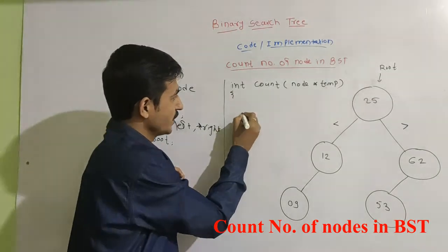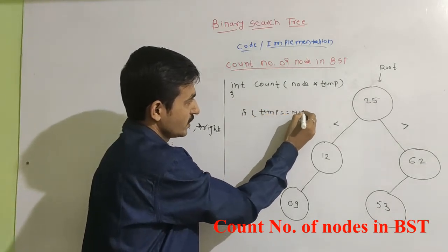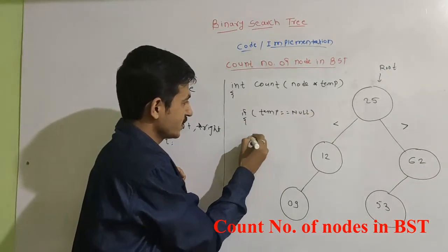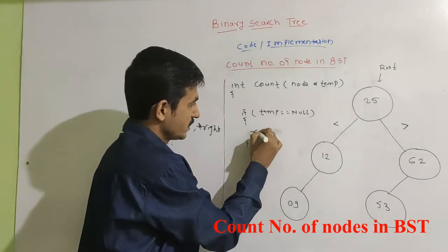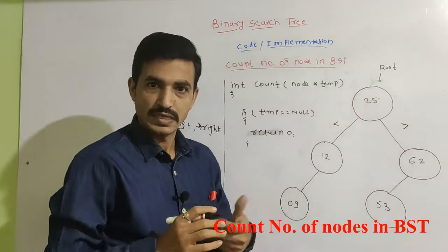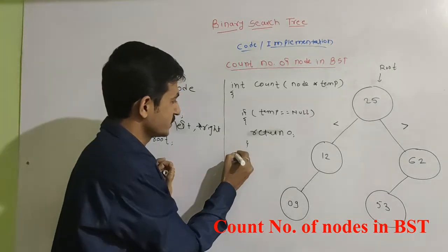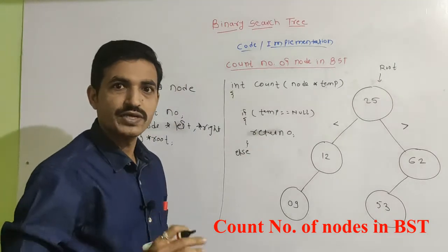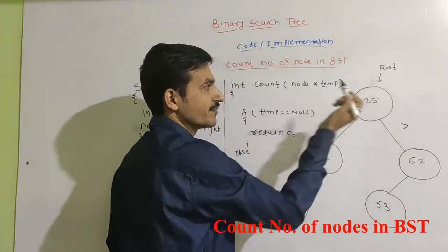Inside the function, we write: if temp is equal to null, return zero. So if the node contains nothing — when it reaches a leaf node, a child node, or if the tree is empty — it will return zero. If it is not the case, then in the else part we need to count the total number of nodes on the left side, the total number of nodes on the right side, and add one for the root.